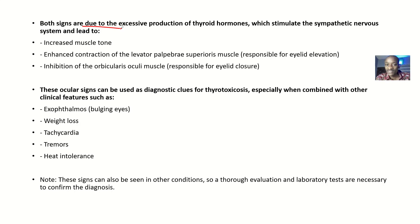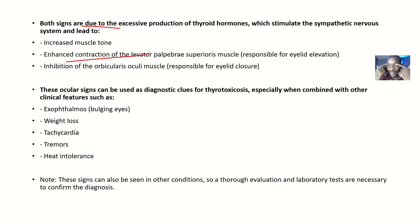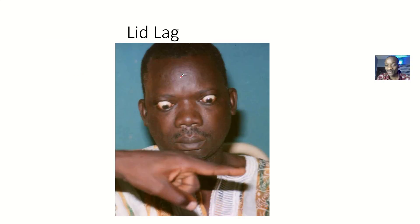Both signs are due to excessive production of thyroid hormones, which stimulate the sympathetic nervous system. This leads to increased muscle tone and enhanced contraction of the levator palpebrae superioris muscle, which is responsible for elevating the eyelids. There is also inhibition of the orbicularis oculi muscle, which is responsible for eyelid closure — meaning the person might even sleep with their eyes wide open.